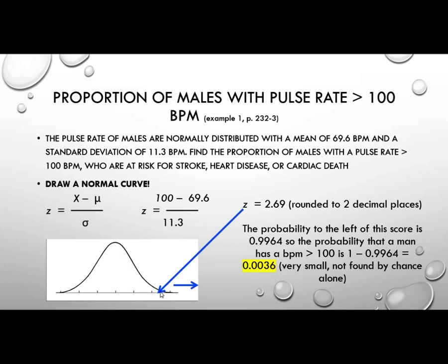That goes about right here. So what we're looking for in our textbook is the probability. It only gives us the probability to the left. So we're going to go and find 2.69, and what we get is 0.9964. So the probability that a man has a BPM greater than that is what's over here. So we have to subtract it from 1. 1 minus 0.9964 is equal to 0.0036. Very small, not found by chance alone. If you'll recall, it's smaller than 0.05, and it's in this tail. So we would say that that is a significant finding, a significance.